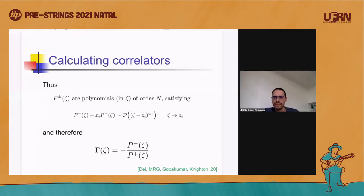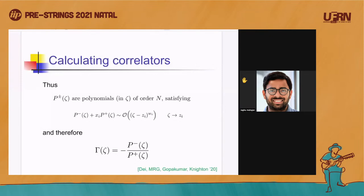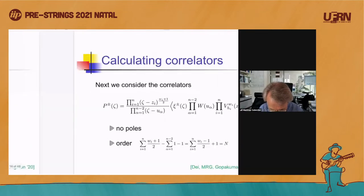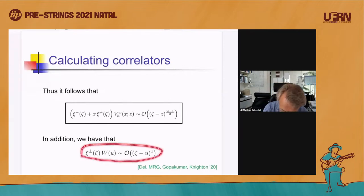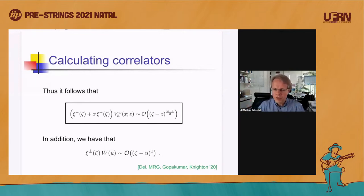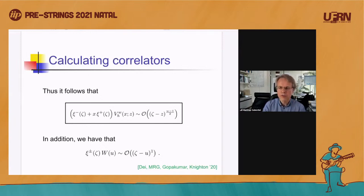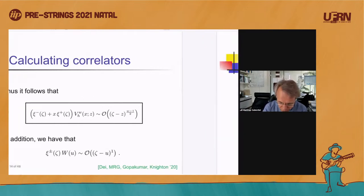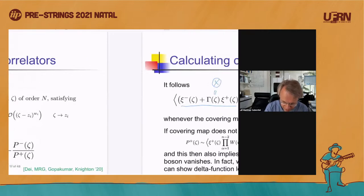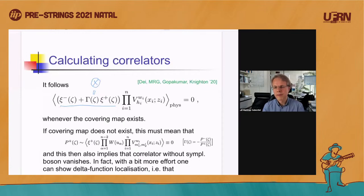Agu asks: if you replaced ξ^+ and ξ^- with η^+ and η^- in this argument, would you get the same result? No — what changes is the regularity property. In our conventions, ξ^+ is regular near the vacuum insertions W, while η^+ has poles there. There is some relation involving the derivative of the covering map, but it's not as simple. For showing the correlator localizes, it's sufficient to look at the combination of the ξ's.